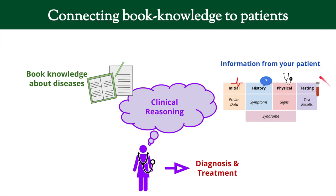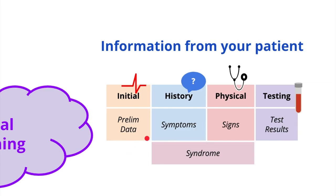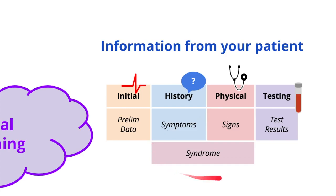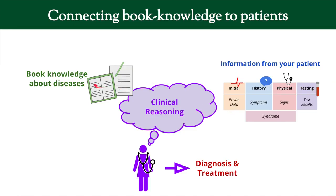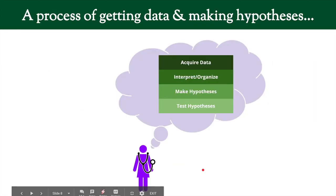Information from the patient can come from multiple different sources. It could be the initial data — vital signs, how they look, or what they told the nurses. The history is what you ask the patient and they tell you — the subjective component of what they are feeling. The physical is what you measure, examine, observe, and find, along with the results of testing. Symptoms and signs together are often referred to as a syndrome if they fit a particular disease. You combine all of this with your book knowledge through clinical reasoning to come up with a diagnosis and treatment.